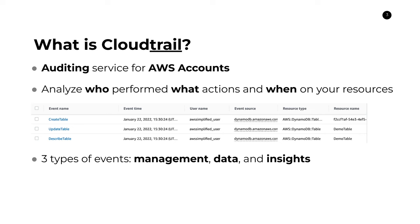Now the second type is data events. Data events are usually in much higher volume and include things like queries on a DynamoDB table or invocations of a Lambda function — much higher throughput. These do not come enabled by default; you have to enable them on a particular AWS service if you want to capture this type of information.